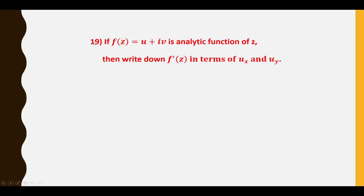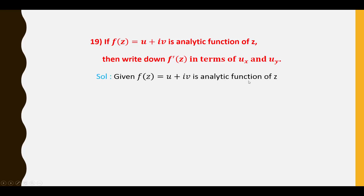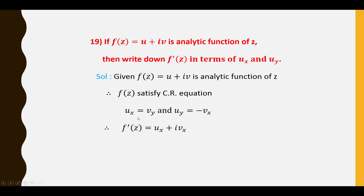Nineteenth question: If F(Z) = U + iV is an analytic function, write F'(Z) in terms of Uₓ and Uᵧ. Since F(Z) is analytic, it satisfies the Cauchy-Riemann equations: Uₓ = Vᵧ and Uᵧ = −Vₓ. So F'(Z) = Uₓ + iVₓ. Substituting Vₓ = −Uᵧ, we get F'(Z) = Uₓ − iUᵧ.